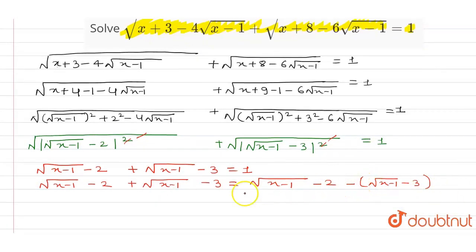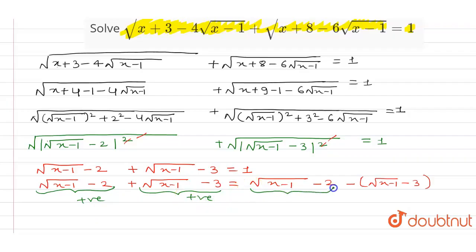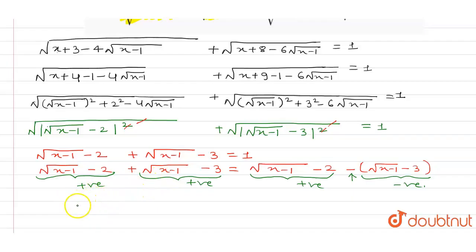This entire function is positive and this entire function is also positive, but due to this negative sign, this entire function becomes negative. So I can also write it as: √(x − 1) − 2 ≥ 0, and √(x − 1) − 3 ≤ 0.